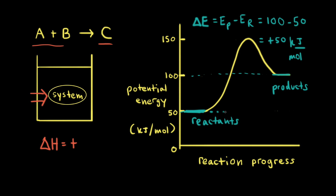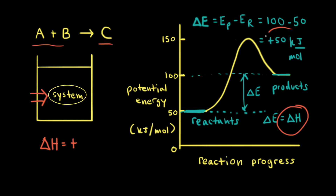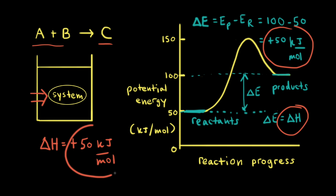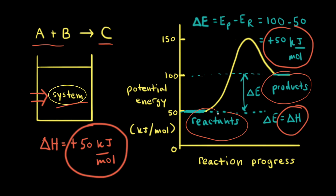So on our diagram, if we represent delta E, that would be this difference here on the energy profile. And once again, delta E is equal to the change in enthalpy delta H for the reaction. So delta H for this hypothetical reaction is positive 50 kilojoules per mole. Since delta H is positive, we know the energy was transferred from the surroundings to the system, and that's why the products have a higher potential energy than the reactants in our energy diagram.